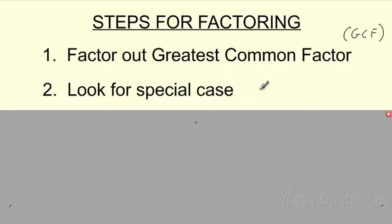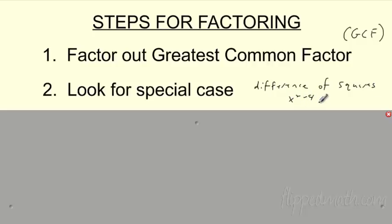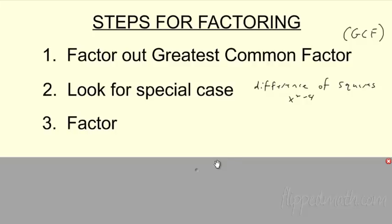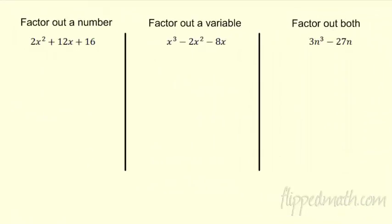Then we're going to look for some kind of special case. Remember our special cases are our difference of squares. Remember, they were things that looked like x squared minus 4 — it's got the minus, it's a perfect square, so you can go x plus 2, x minus 2. Once we do that, we're going to go ahead and factor it out. We've only got three steps, and we are going to factor a problem multiple times.